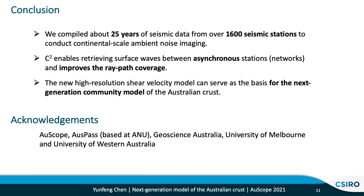In conclusion, we compiled a large seismic dataset to conduct ambient noise imaging of the Australian continent. The C2 workflow enables retrieving surface waves between asynchronous stations and networks, which greatly improves the ray-path coverage. This high-resolution shear velocity model can provide new constraints on crustal structures and hopefully can be used as a new basis for the community model of the Australian crust. Finally, this work is not possible without decades of data collection efforts made by the seismological community in Australia. I would like to thank AUSCOPE, AUSPASS based at Australian National University, Geoscience Australia, University of Melbourne, and University of Western Australia for collecting and sharing the seismic data. Thank you for your attention.